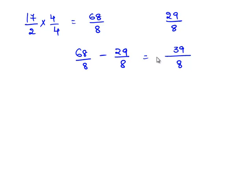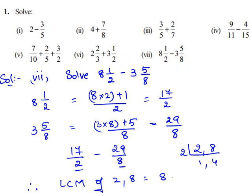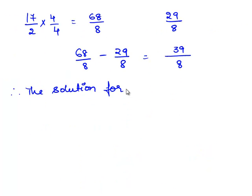Therefore, the solution is 39 by 8. That is, 8 1 by 2 minus 3 5 by 8 is equal to 39 by 8.